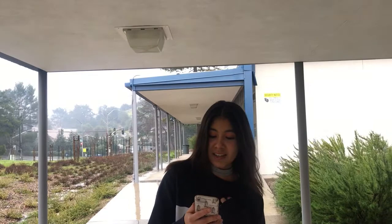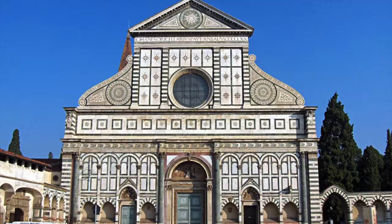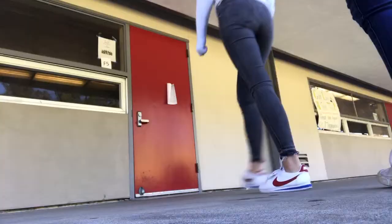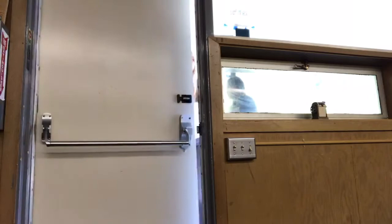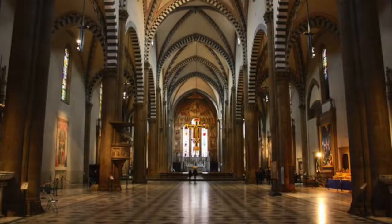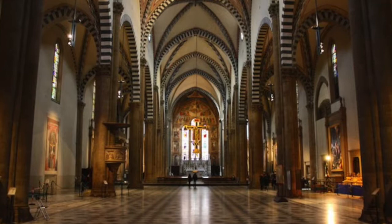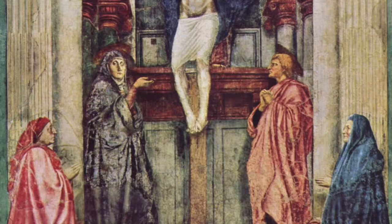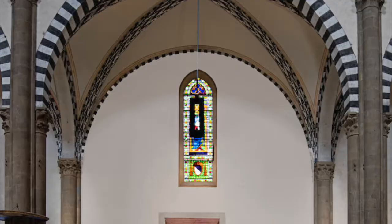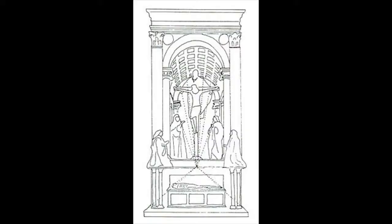Now let's examine one of Masaccio's greatest works at the Santa Maria Novella. We are now walking inside the Santa Maria Novella. Located on the left wall of the nave, inside the left aisle, is the Holy Trinity by Masaccio. The fresco is directly opposite of the entrance. It is the earliest known example of one-point linear perspective.